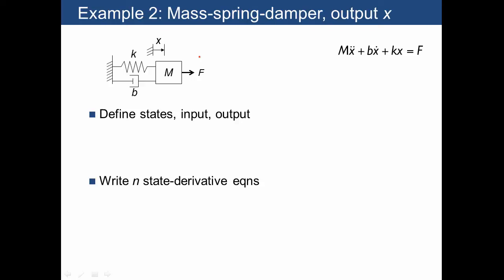Let's find the state variable description for this mass-spring-damper system. We already know the input-output form, but we're going to start from scratch here.